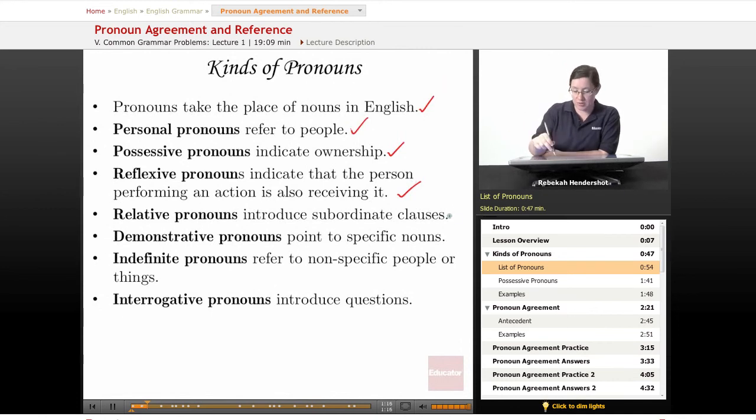Relative pronouns introduce subordinate clauses, so we're looking at that, which, and that whole family. Demonstrative pronouns point to specific nouns: this, that, these, those. Indefinite pronouns refer to nonspecific people or things: somebody, anybody, everyone, all that good stuff.